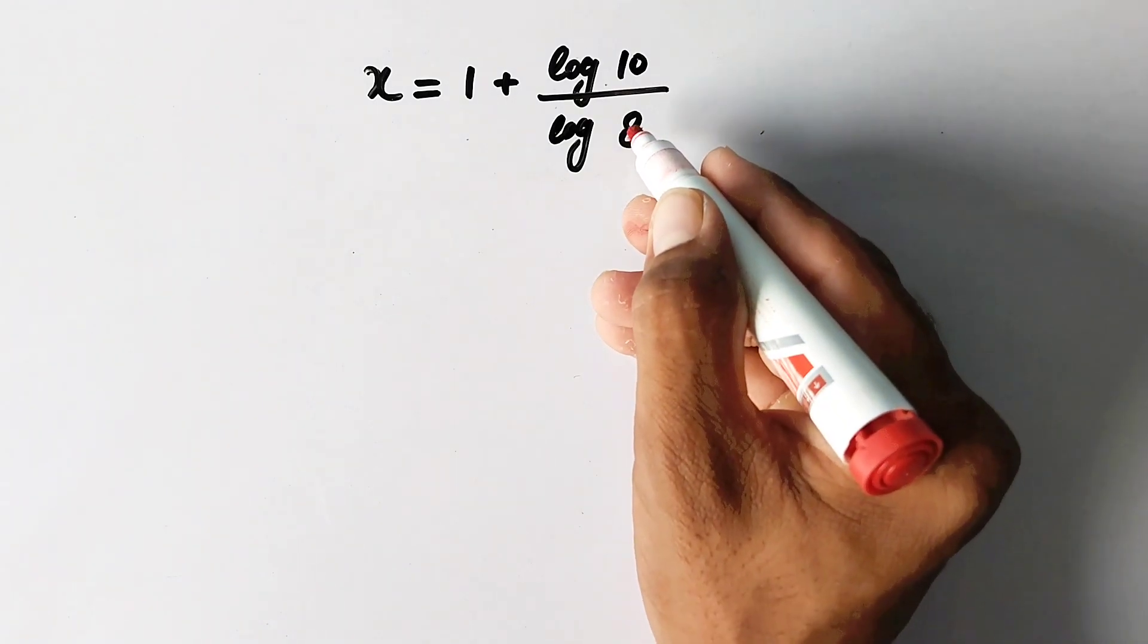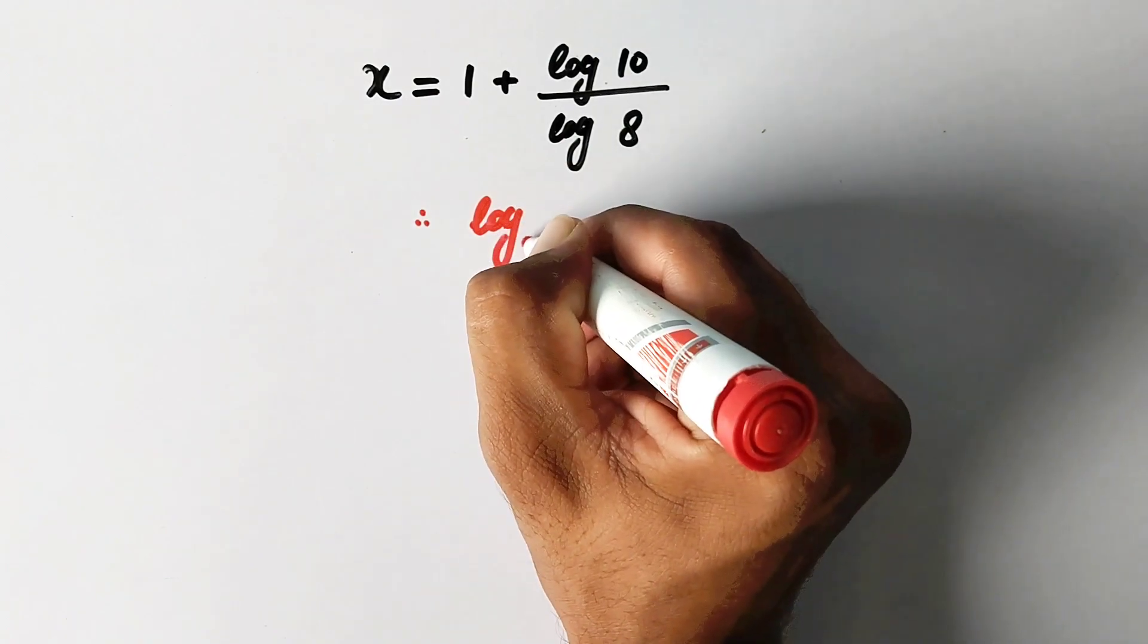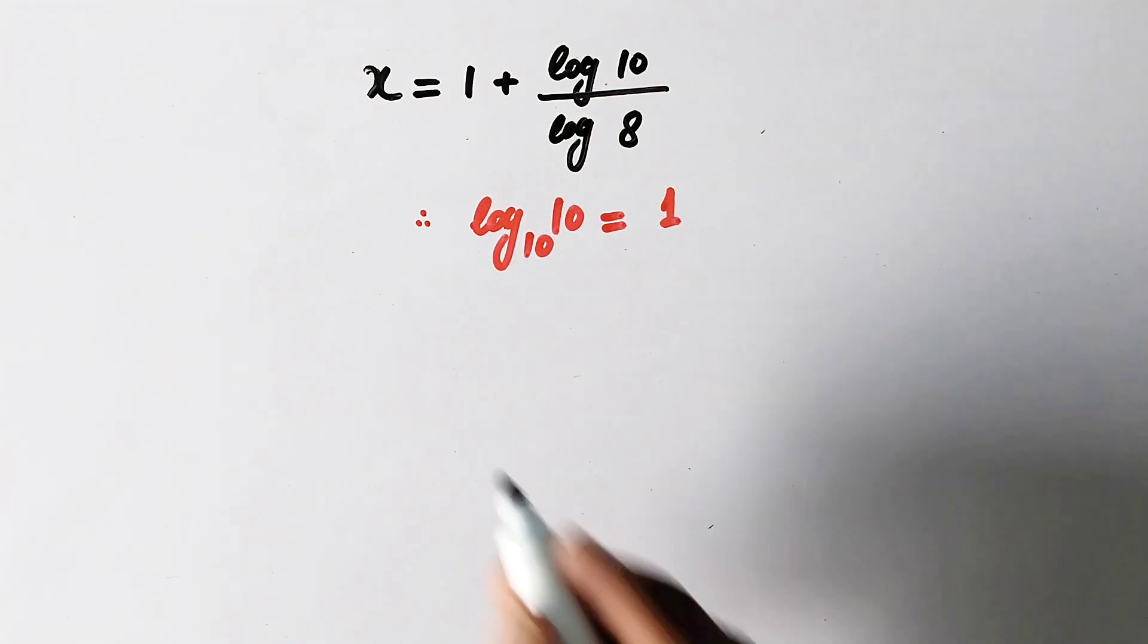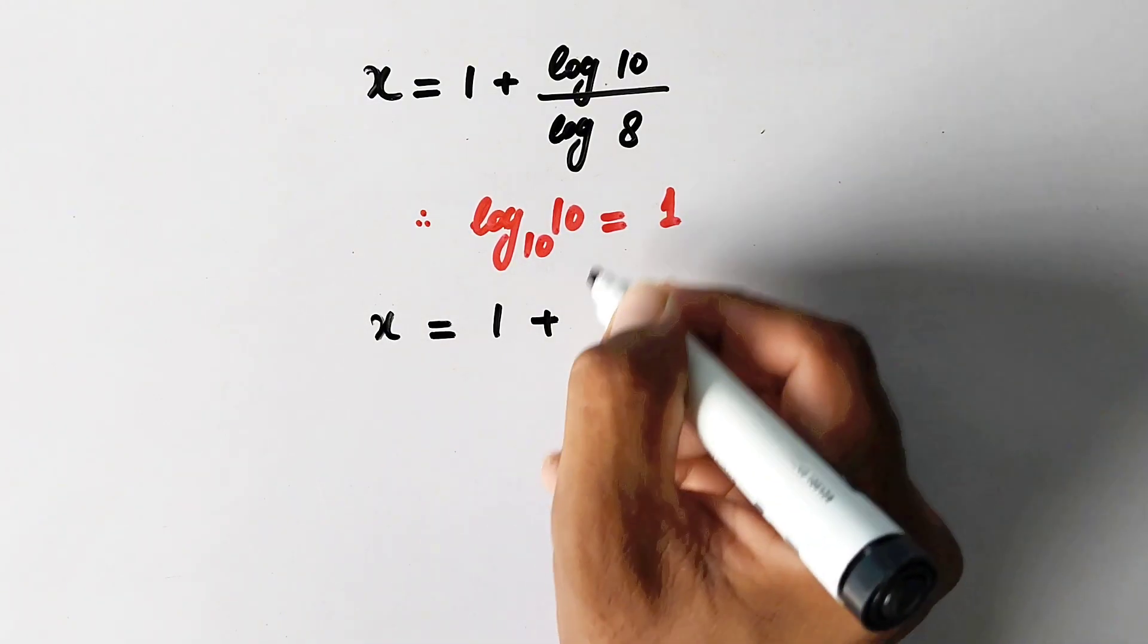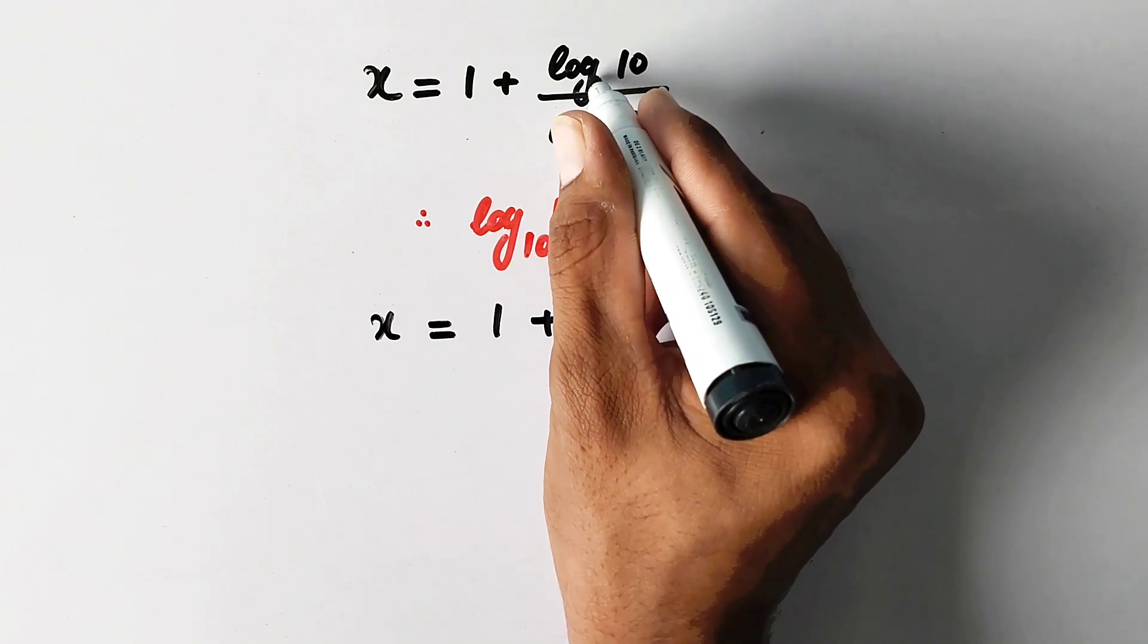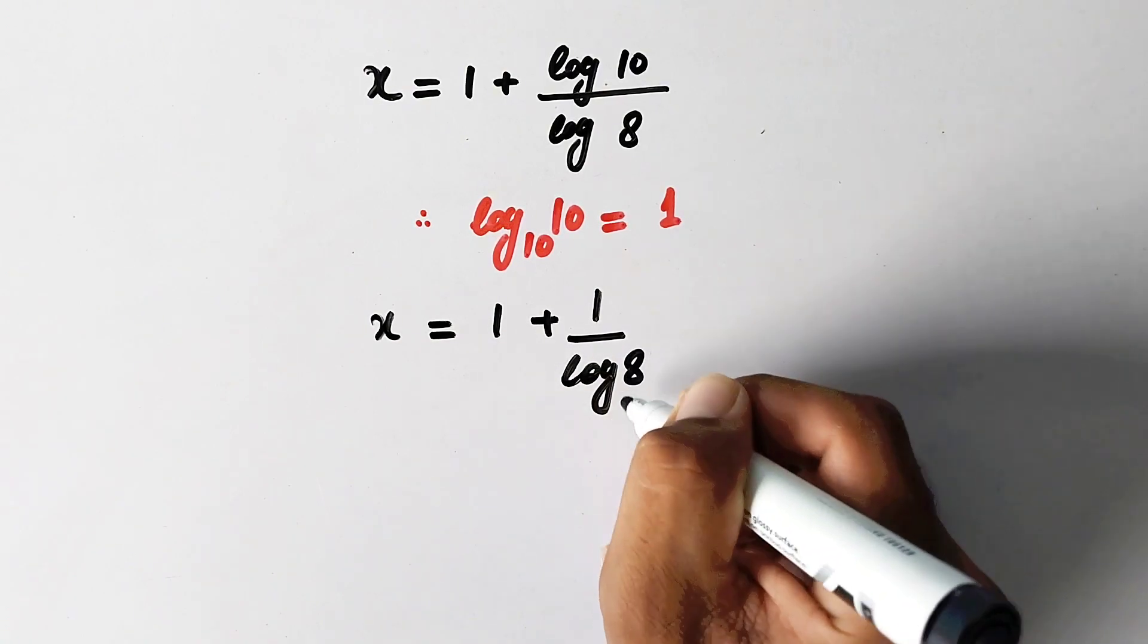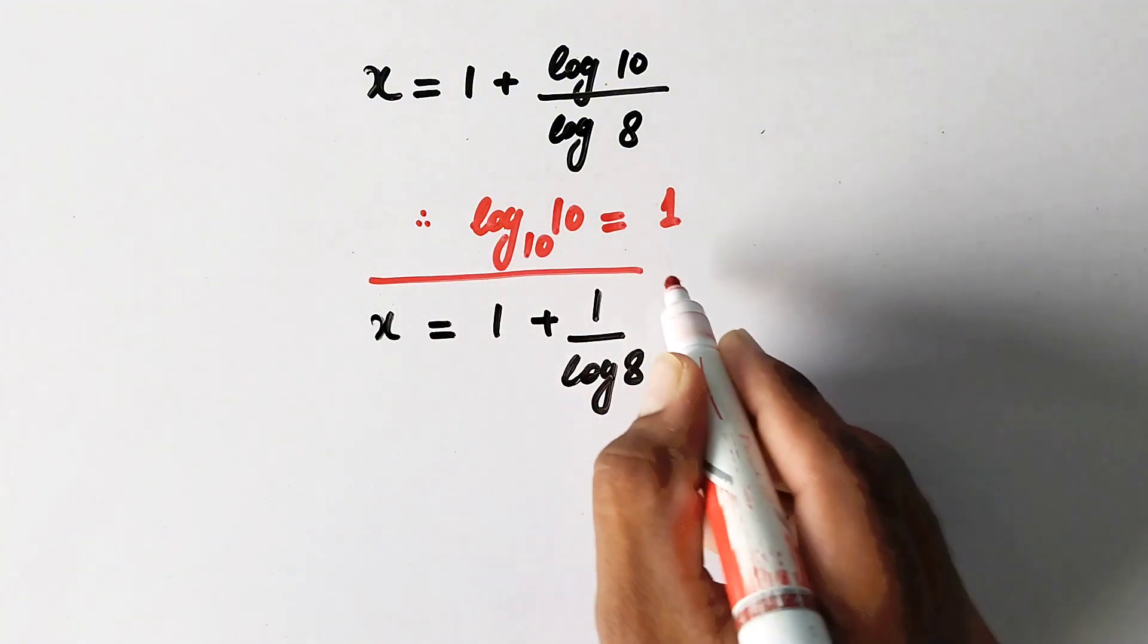Or this can be further solved as we know that log of any value with the same base is always equal to 1. So here x is equal to 1 plus, and this log is common log with base 10, so log base 10 of 10 is equal to 1 over log of 8. That is our final answer or solution to this problem.